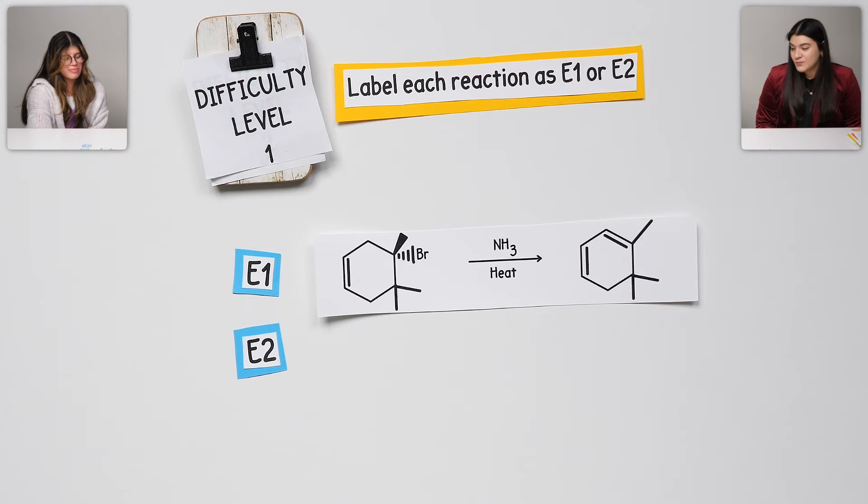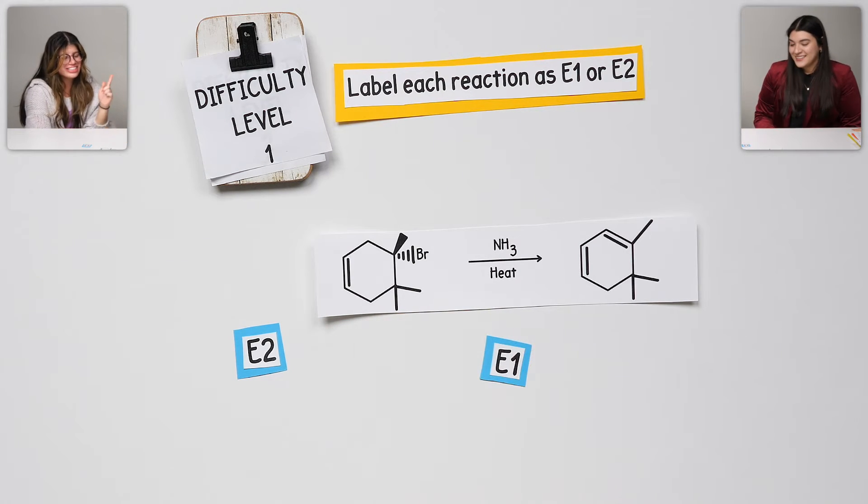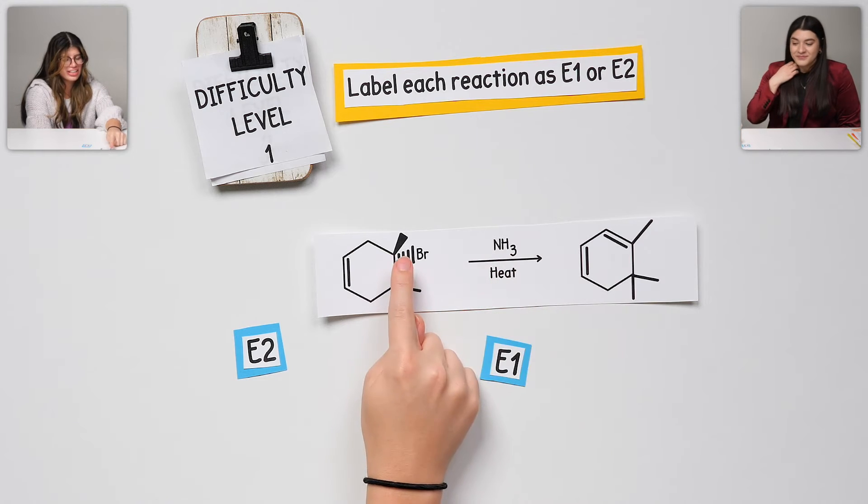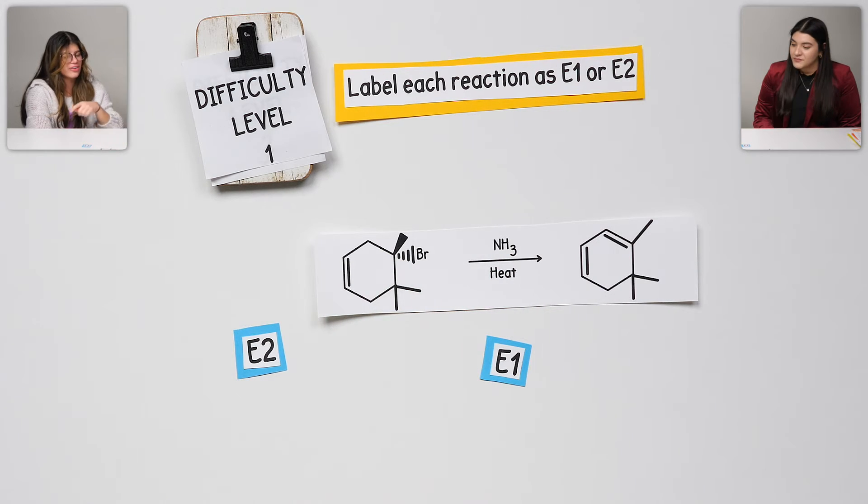What about this one? NH3 with heat. It'd be E1. Why? Or is that a guess? I feel like I feel confident on it. But, this right here is kind of throwing me off. But, I guess I'm more looking at this. I don't know, actually. Is it not E1?